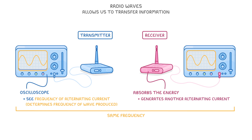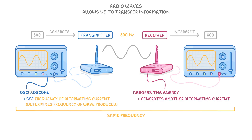This concept effectively allows us to transfer information. For example, if we wanted to communicate the number 800, we would just generate a wave that has a frequency of 800 Hz. And then anybody with a receiver could interpret it as 800. So we've effectively transferred the number 800 using alternating currents and radio waves. And the cool thing is that we can use this basic method to transfer information of pretty much any kind, not just basic numbers.